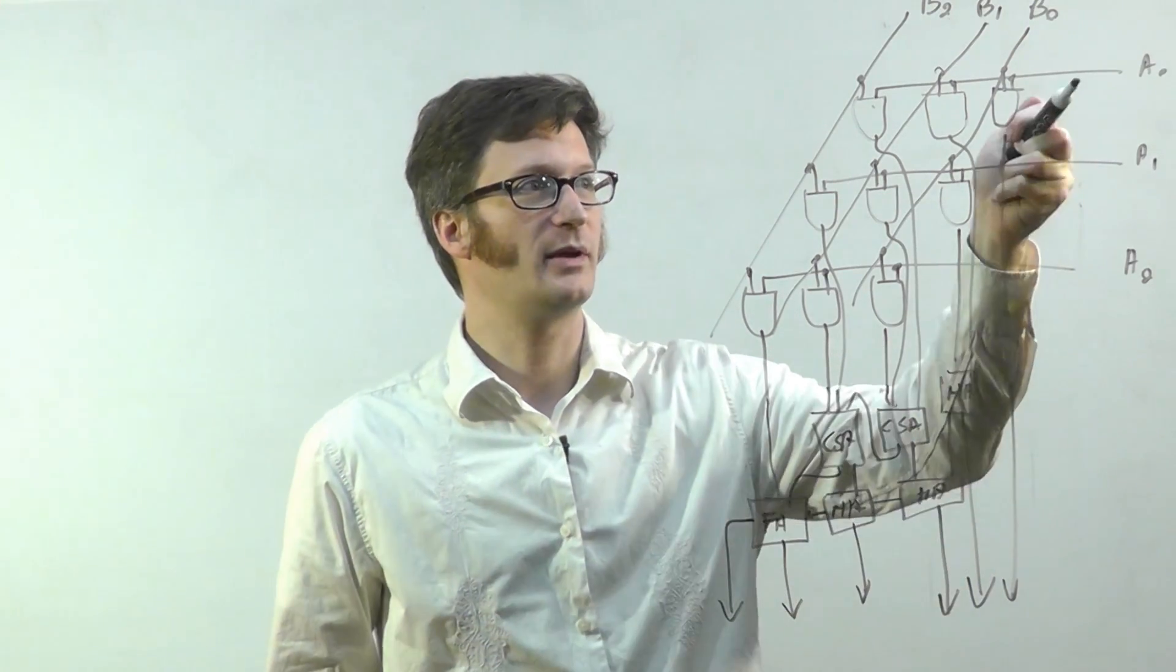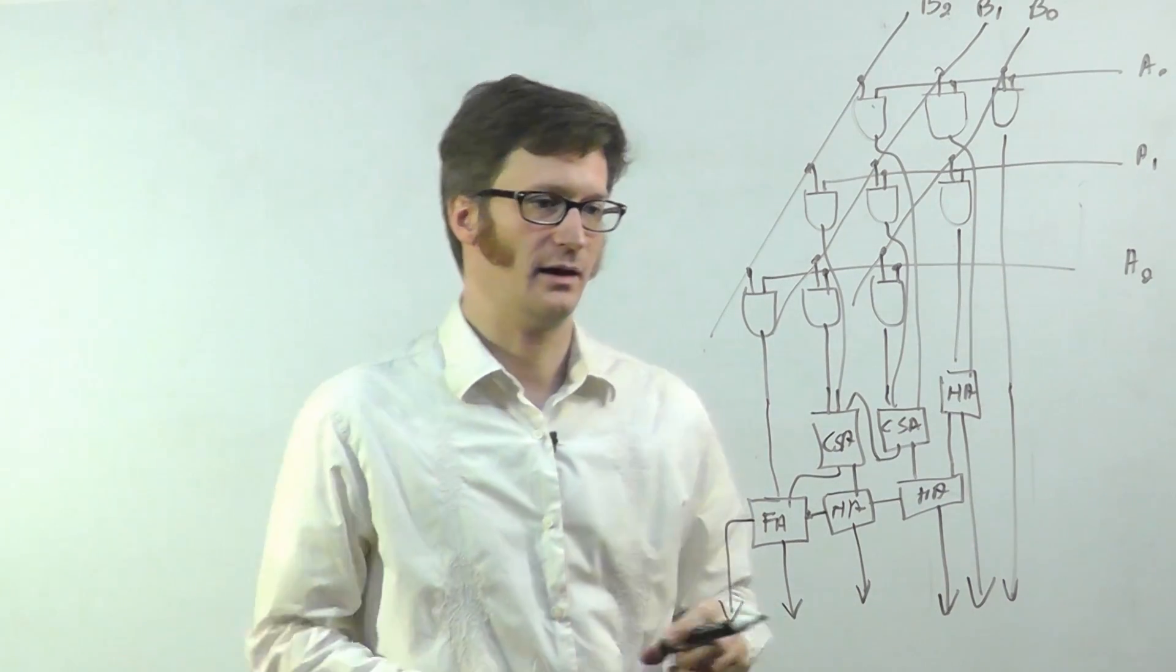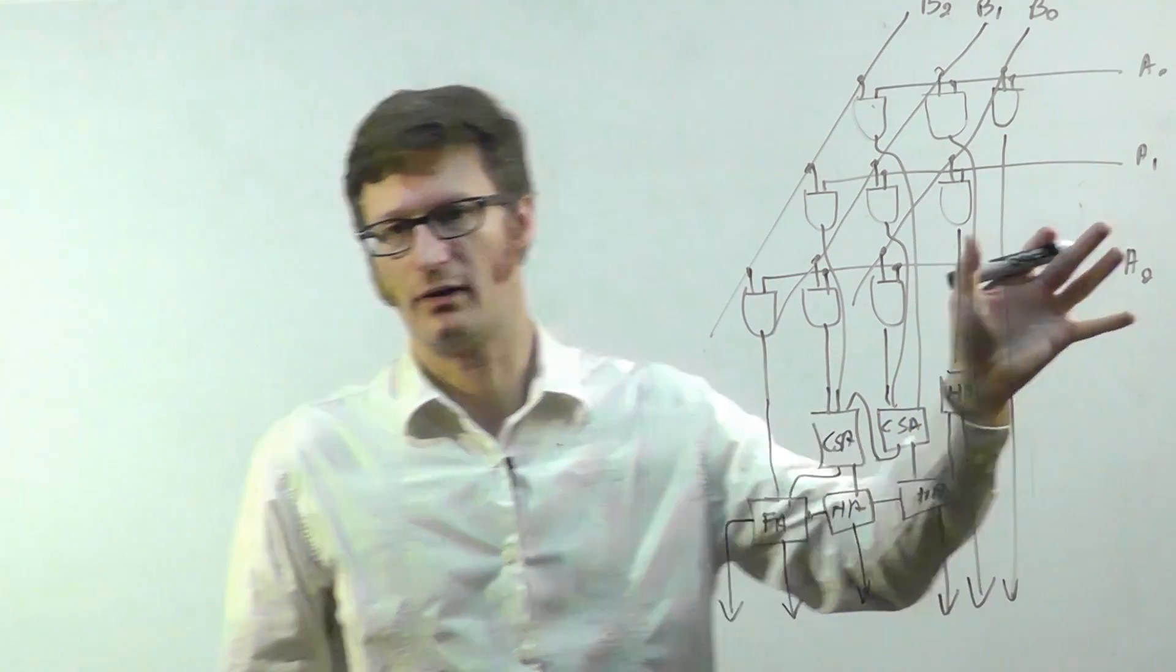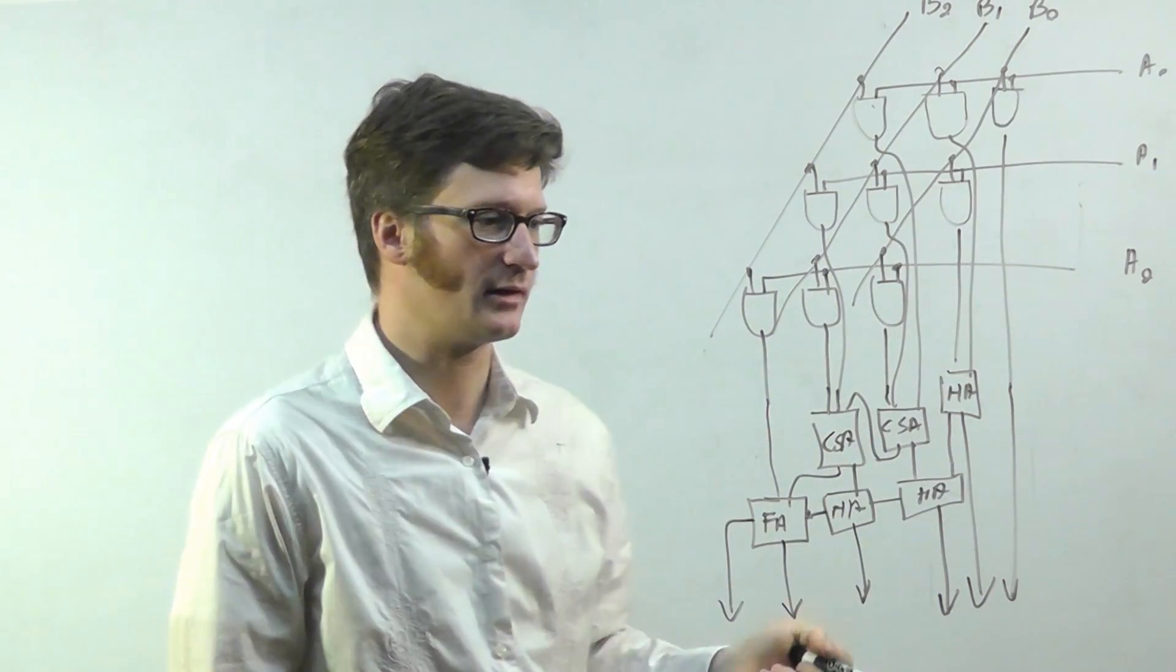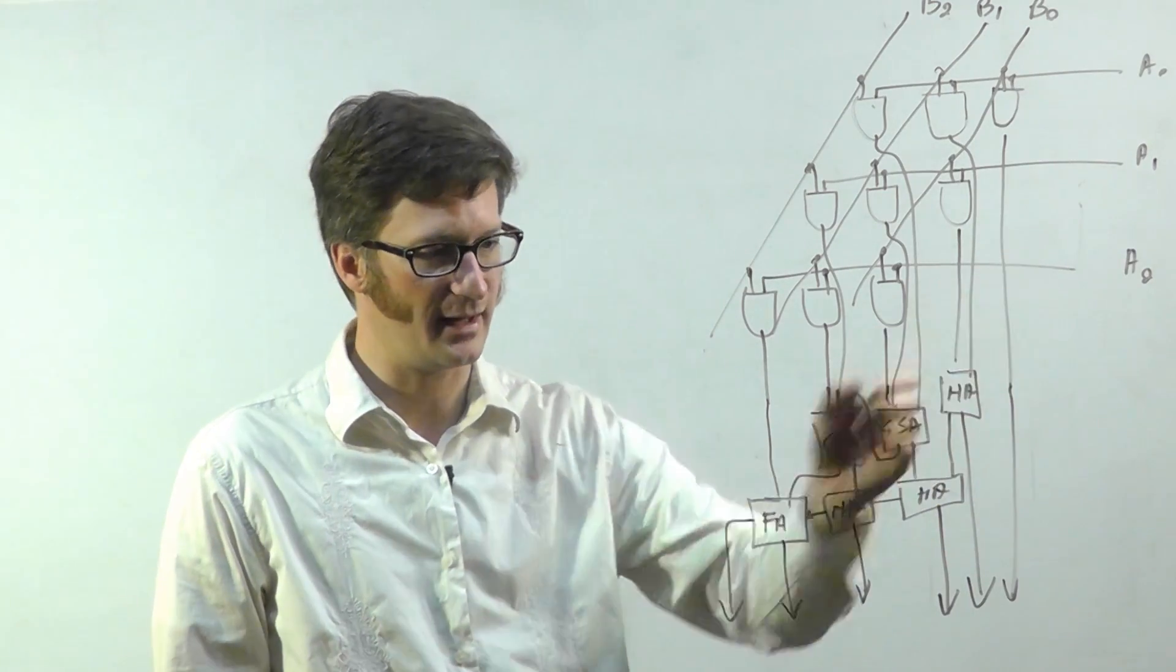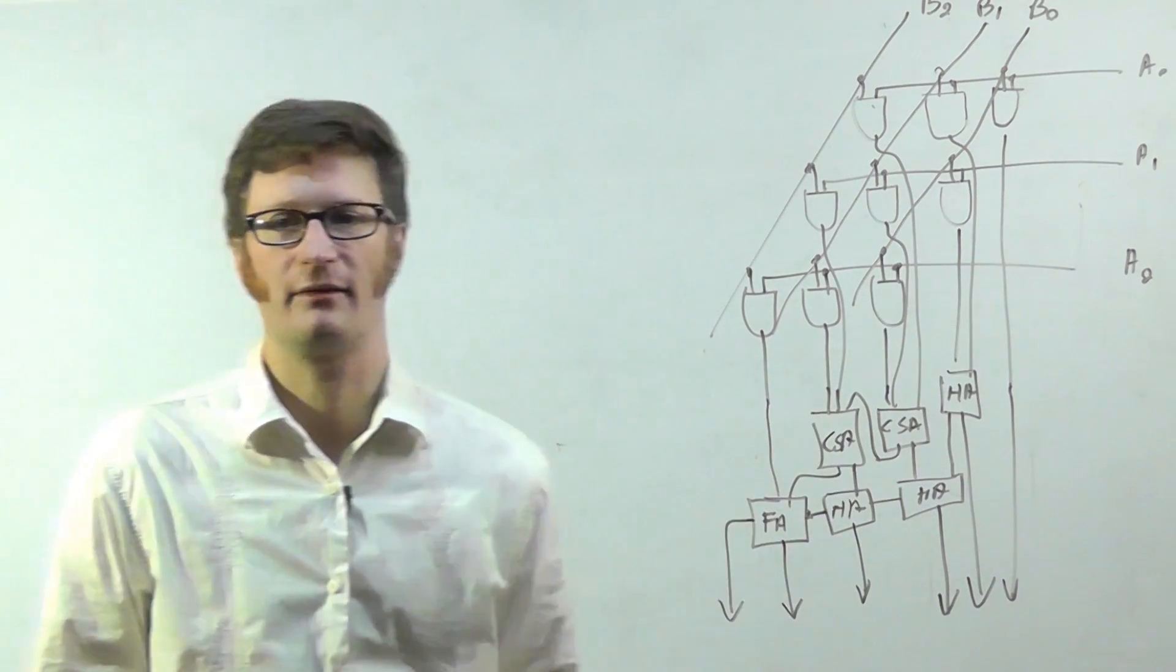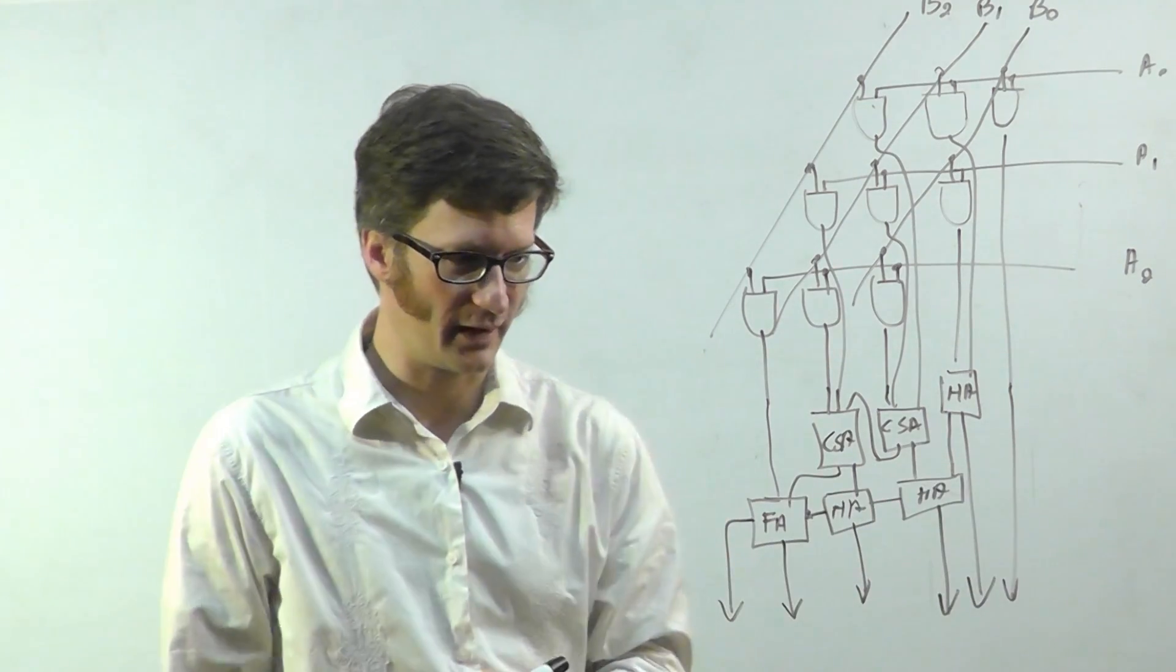When you multiply three bits by three bits, you get six bits in the answer. And I didn't really show it here so much, but what you get when you have a lot more bits that you're multiplying together is you end up with a whole bunch of carry save adders. And the carries kind of propagate down like they're doing here, even though this is on this level. They propagate down diagonally. And then after all those carry save adders, you have a ripple carry adder.